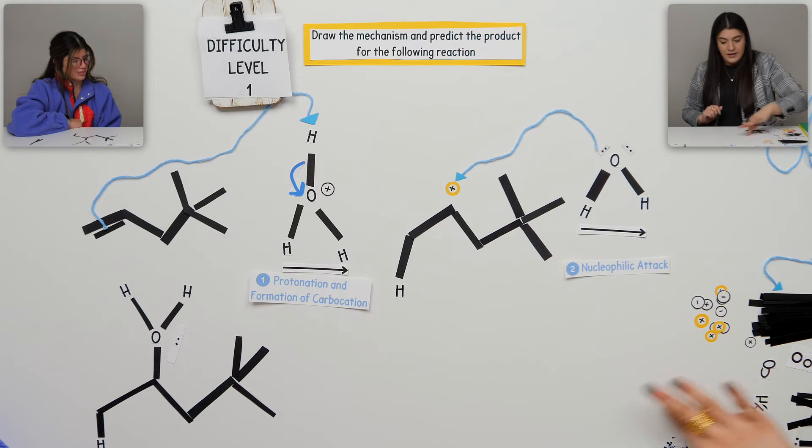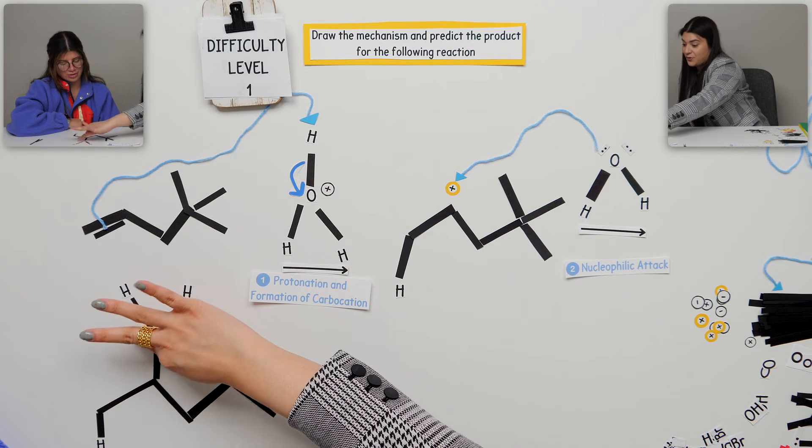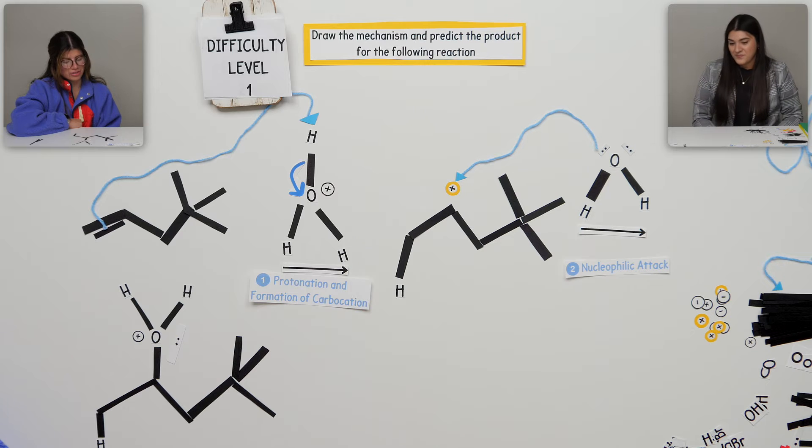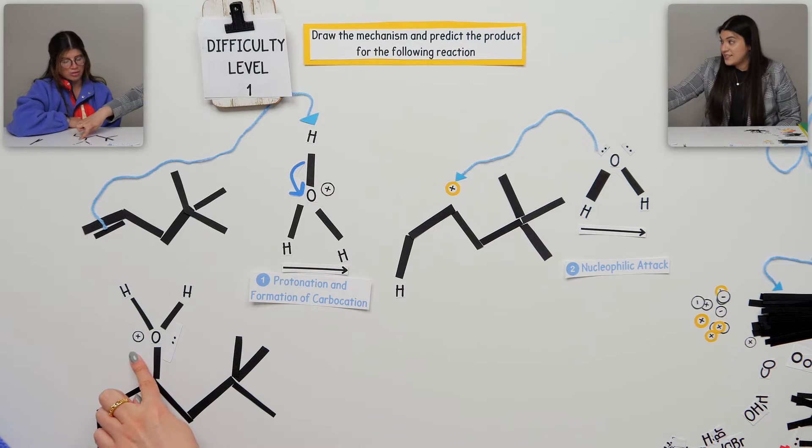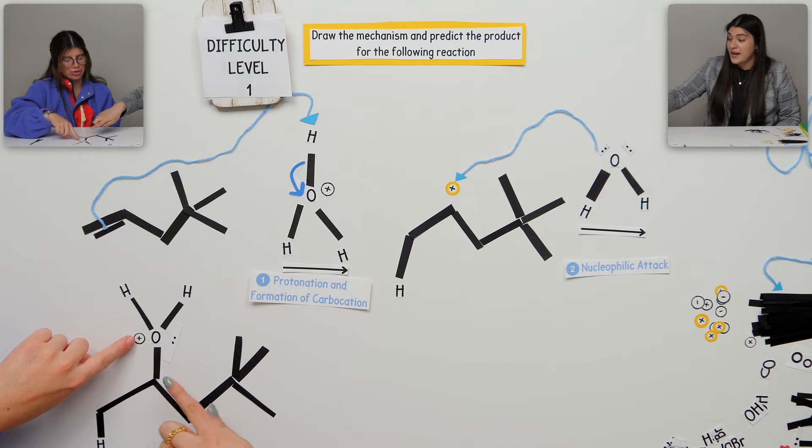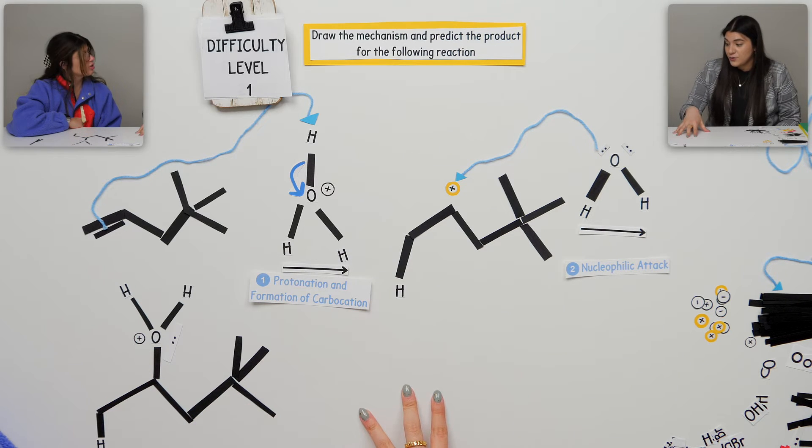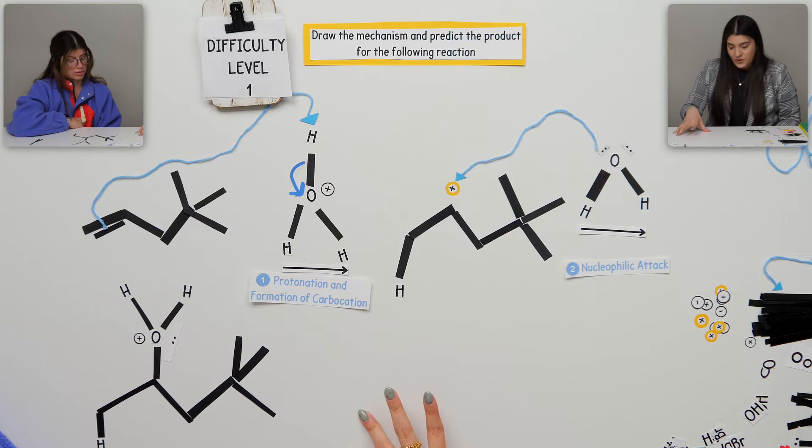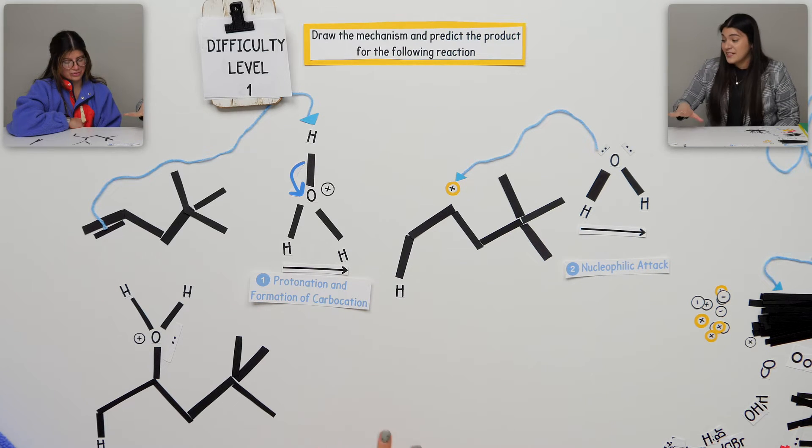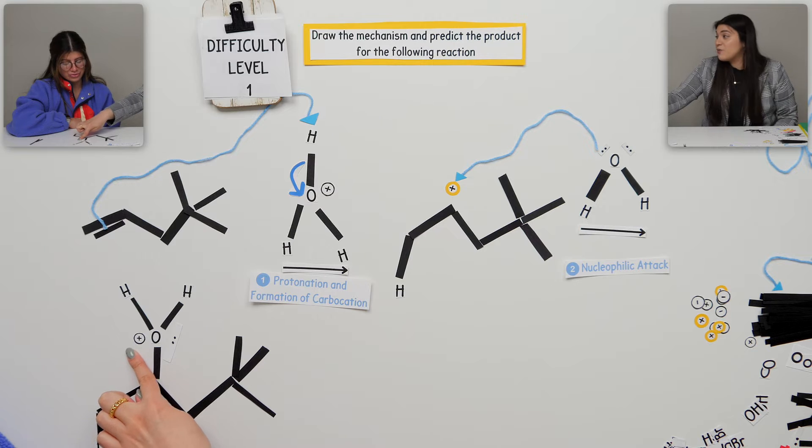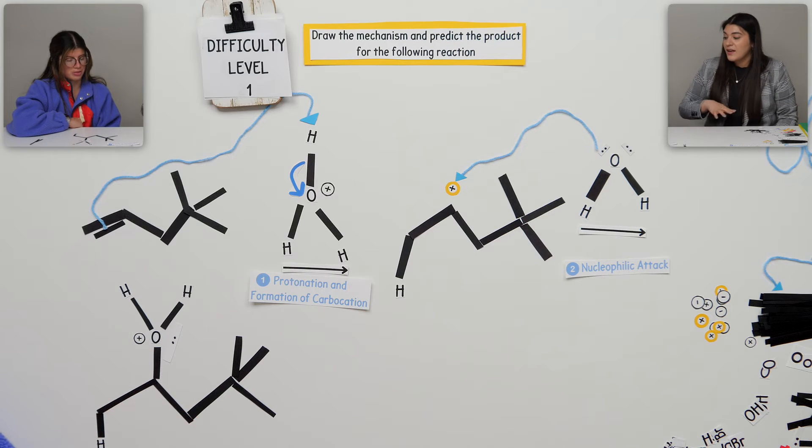And you would have been docked points if you don't show that. Oh. So I have to include my lone pairs when I'm drawing them. You have to include the charges. Oh, the charges. The charges is what I'm talking about. You would get docked points for the charges. If your instructor wants you to show all the lone pairs, you would also get docked points if you didn't. But I would say the main one is charges. That one I see. It would be wrong if you didn't put it. Okay. So put my charge.